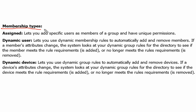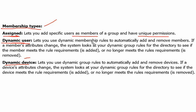Now let's look at the membership types in groups. First is Assigned — this allows you to add specific users as members. You can add or remove members in the group and added users will have unique permissions. Second is Dynamic User, which is not used in this question but is worth noting — it applies to users only. Third is Dynamic Device, which is used in our question.